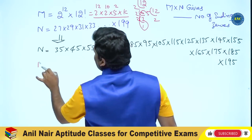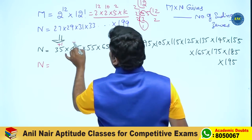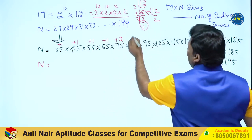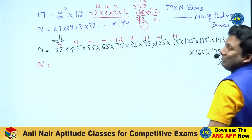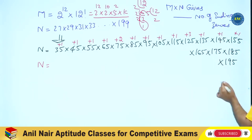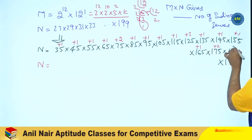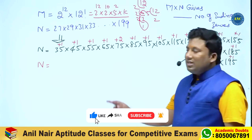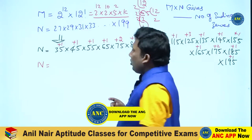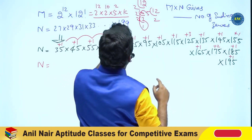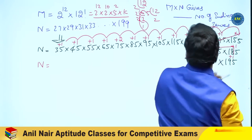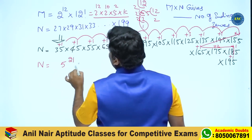For N, counting powers of 5 among the odd multiples: 35 gives +1, 45 gives +1, 55 gives +1, 65 gives +1, 75 is 25 into 3 so +2, 85 gives +1, 95 gives +1, 105 gives +1, 115 gives +1, 125 is 5 cubed so +3, 135 gives +1, 145 gives +1, 155 gives +1, 165 gives +1, 175 is 25 into 7 so +2, 185 gives +1, 195 gives +1. Counting all: total power of 5 in N equals 21. So N equals 5 to the power 21 into K2.